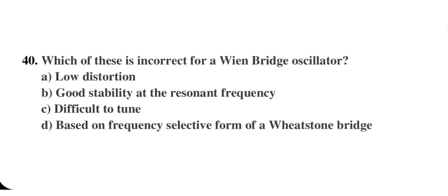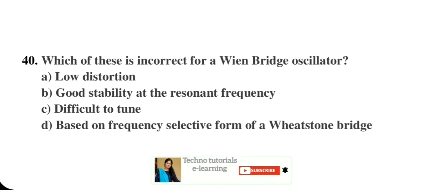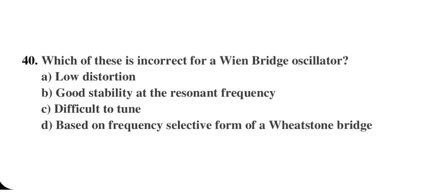Which of these is incorrect for a Wien bridge oscillator — low distortion, good stability at the resonant frequency, difficult to tune, or based on a frequency-selective Wheatstone bridge form? Since the Wien bridge oscillator is generally used in laboratories for experiments, it can be easily tuned. The statement 'difficult to tune' is false, so option C — difficult to tune — is the incorrect statement and thus the right answer.